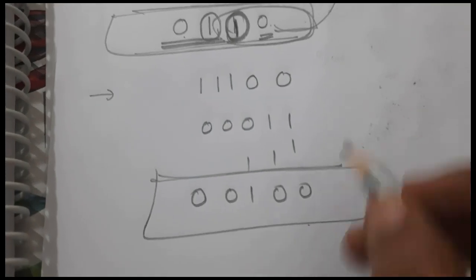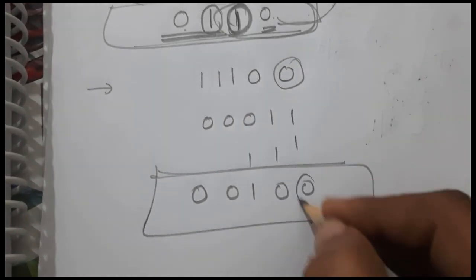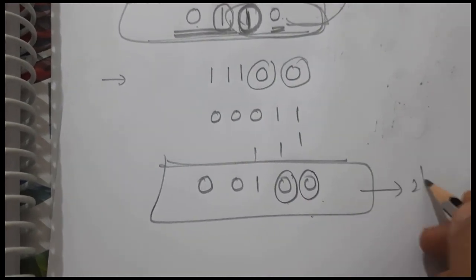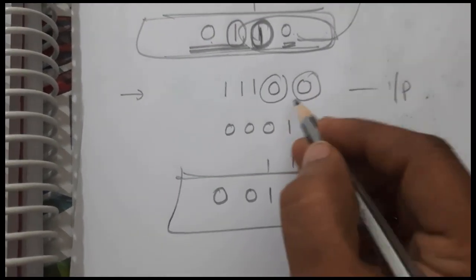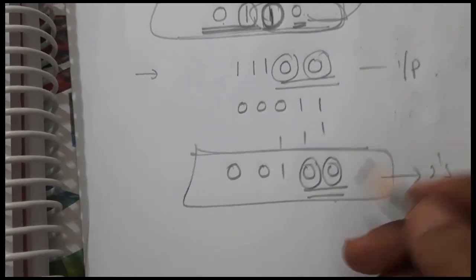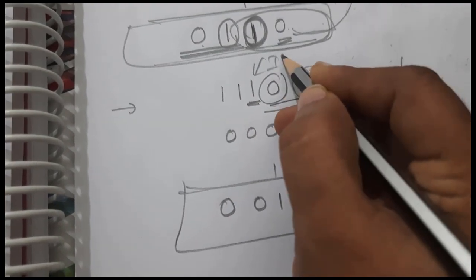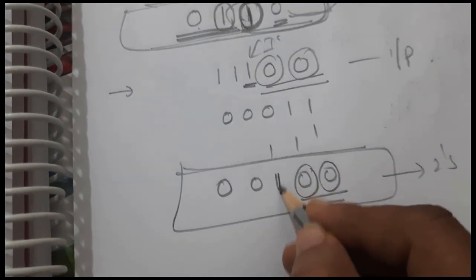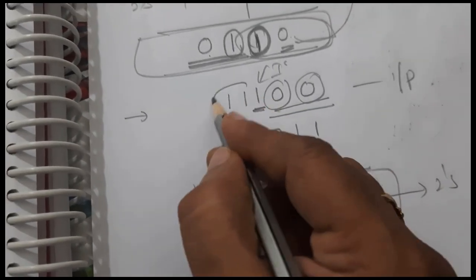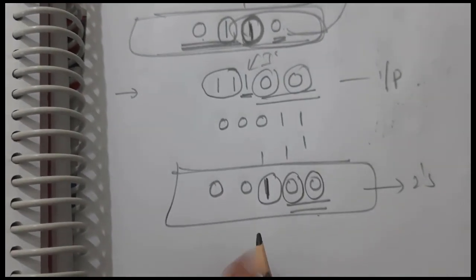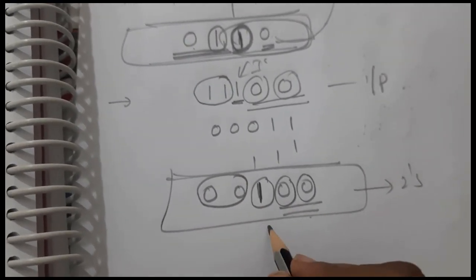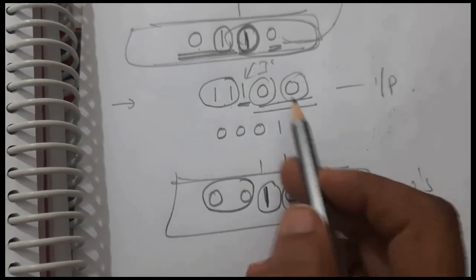Let us verify in the second example also. The MSB bits are 0 and 0, and the same we got in the output. Whenever the first 1 comes, we get that same 1 in the output. After that first 1, whatever the input binary digits are complemented. This is the logic for directly writing the 2's complement of any given binary input.